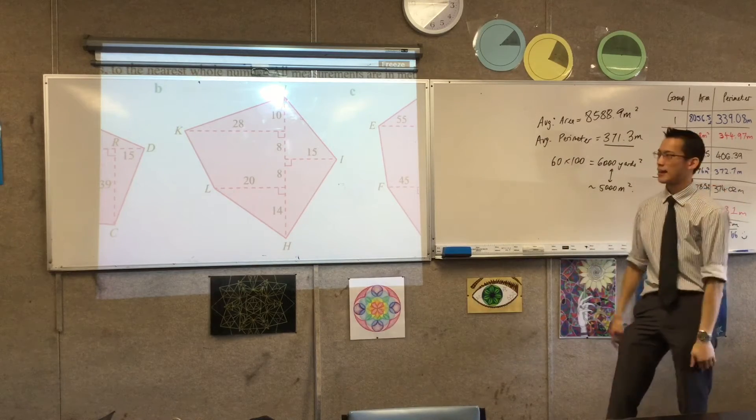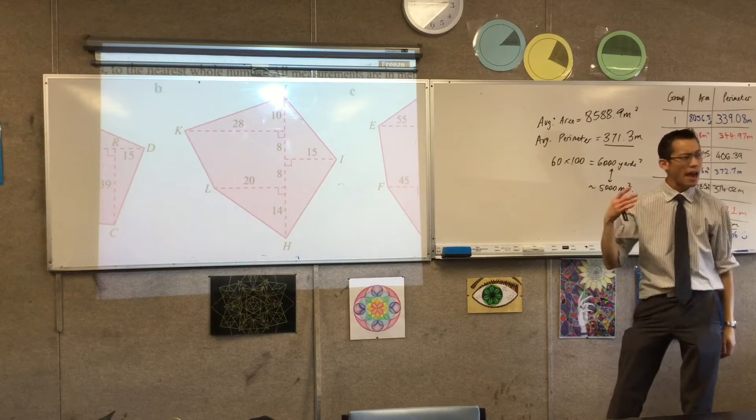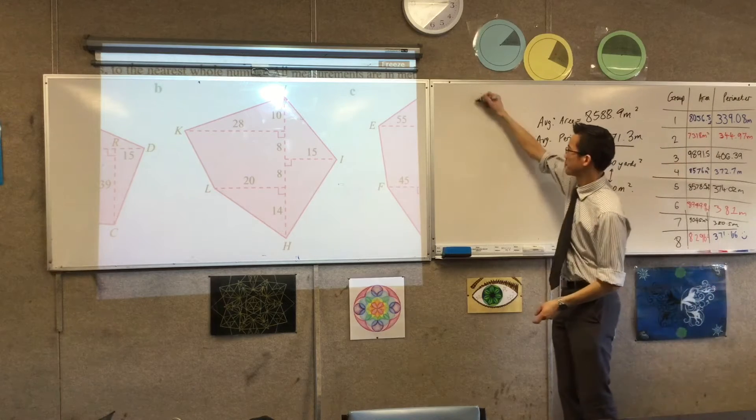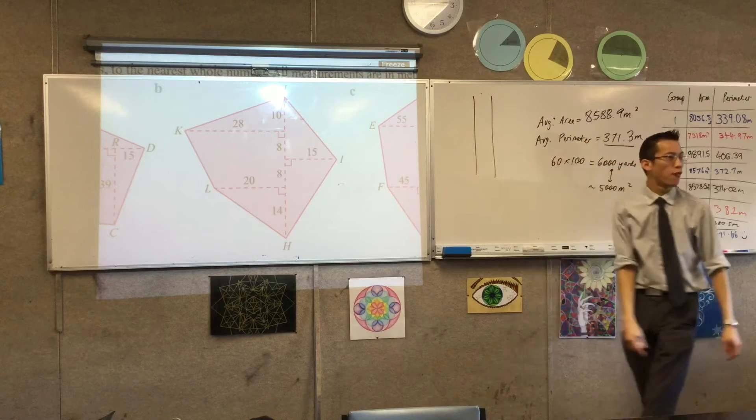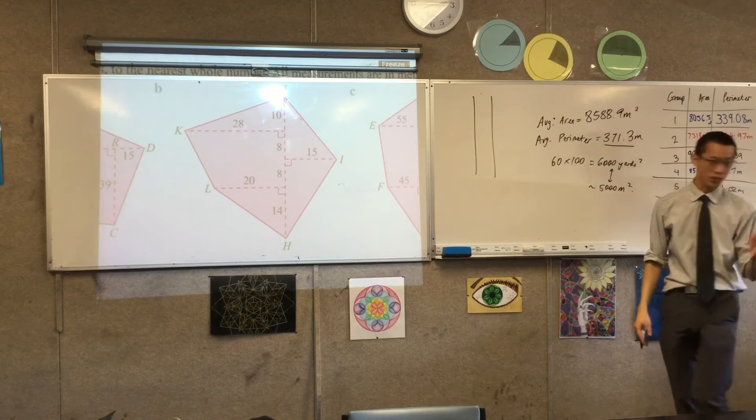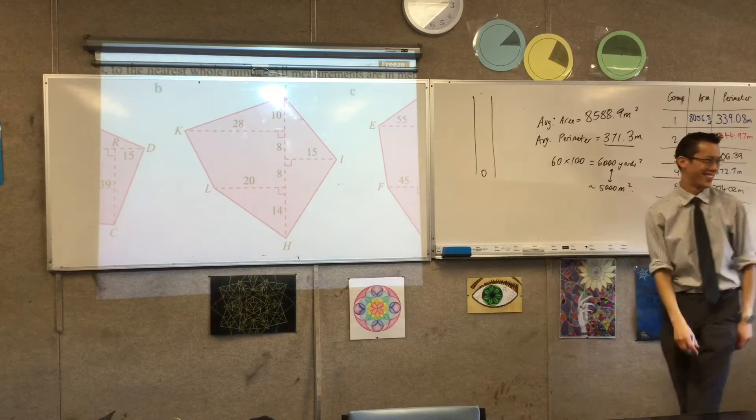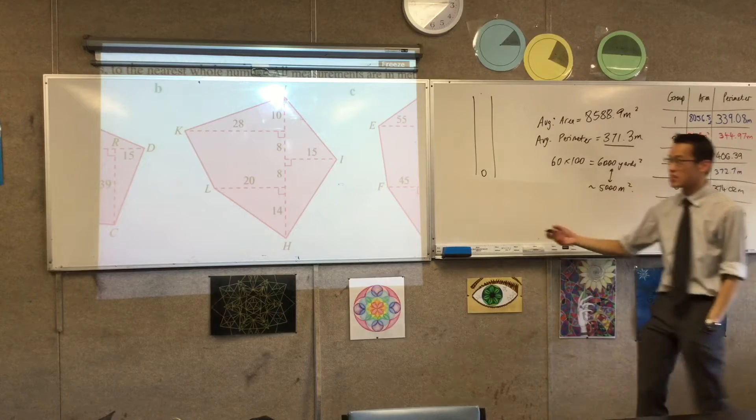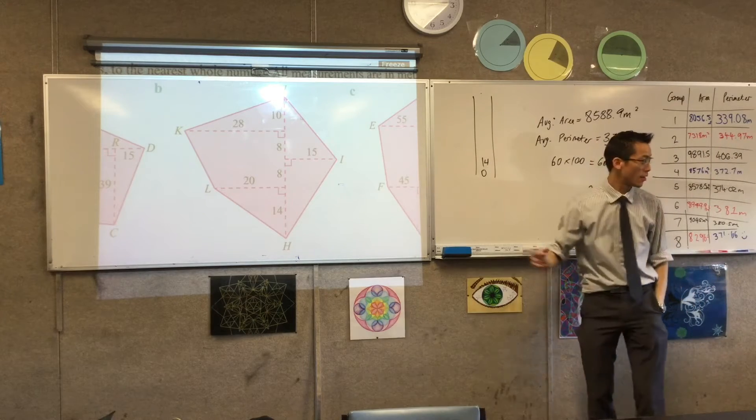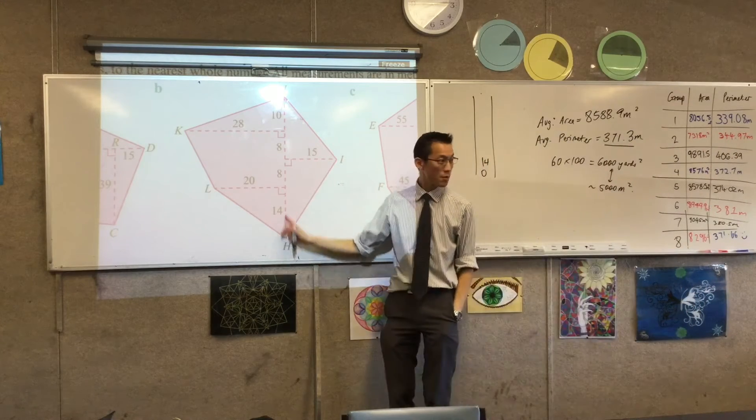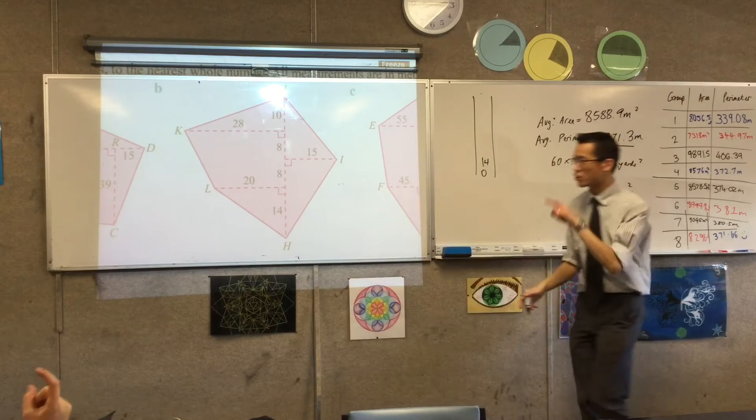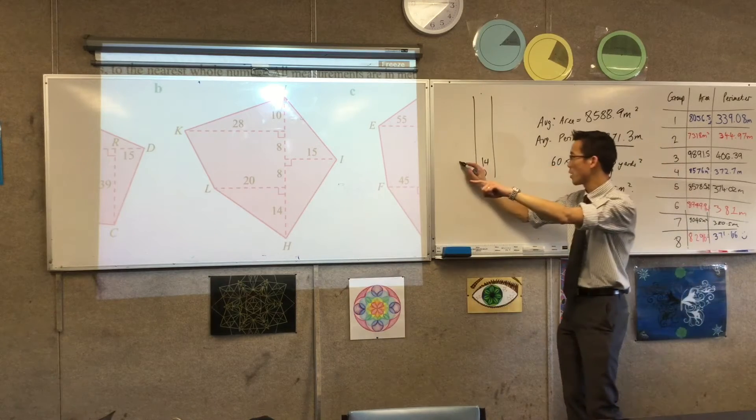But before we actually go ahead and work out some stuff on this, how would we write the numbers for this diagram? I'll give you a clue, it starts with zero. The easiest one is 14, that's fair enough, because I walked up that far, and then I measured to the left, so that's where my 20 goes.